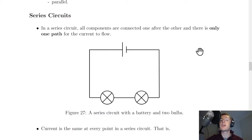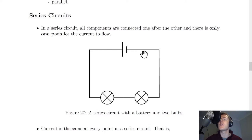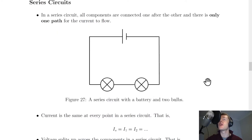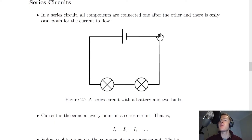One way to think about this is if you were to binge a TV series on Netflix — all the episodes follow one after the other, a bit like all the components in a series circuit. Looking at this circuit diagram, we've got a battery, some wires, and two bulbs. The current flows from the negative terminal through the first bulb, through the second bulb, and back up to the battery.